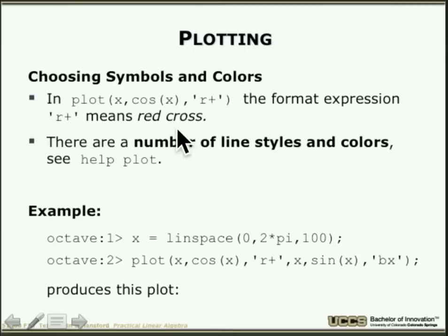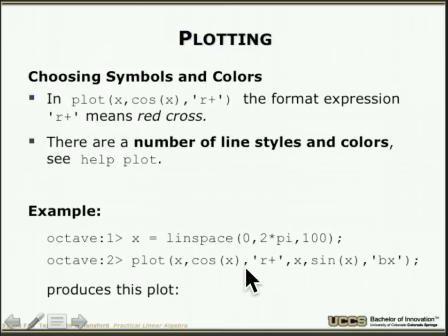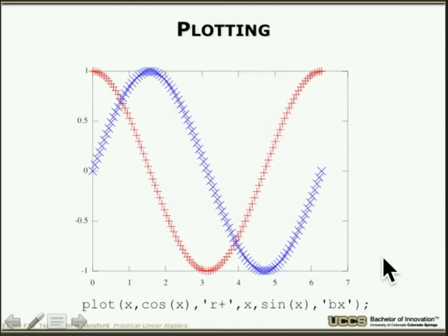You can control colors and symbols: 'plot(x, cos(x), ''r+'')' plots in red with plus markers. The format string specifies color ('r' for red, 'b' for blue, 'k' for black) and marker style. For example: 'plot(x, cos(x), ''r+'', x, sin(x), ''bx'')' overlays two curves. Run 'help plot' to see all line styles and color codes.